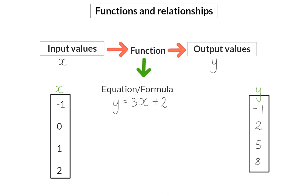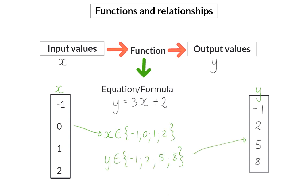The list of input or output values can also be given in a different way other than a table. We can list them by saying x is an element of and then indicating a list with curly brackets, listing the input values as minus one, zero, one, and two. I can also list my output values in a similar way.